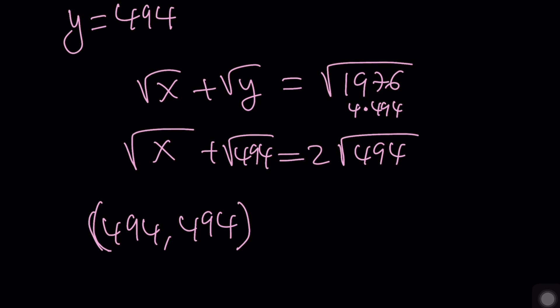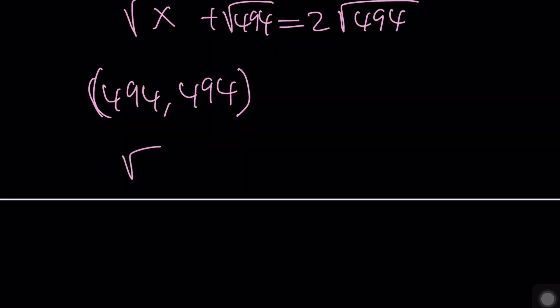But here's the thing. If you think about the trivial case, you should always think about those unless otherwise stated. What happens if x is 0? This totally disappears. And y ends up being 1976, and x becomes 0. And vice versa.